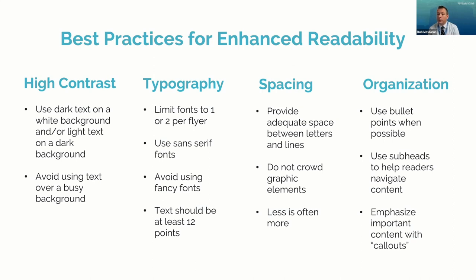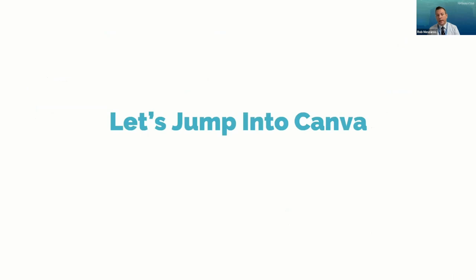Finally, organization. A good rule of thumb is to use bullet points when possible. If I put the same content in paragraph form, it would be hard to follow — bullet points make it really succinct. Use headlines and subheads to help readers navigate the content, and we'll get into that more when we dive into Canva. Emphasize important content with what we call call-outs — basically a box behind text or a burst of some sort. These are the best practices, and we'll dive into Canva and see how these things look.